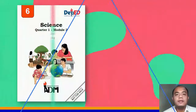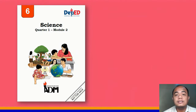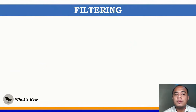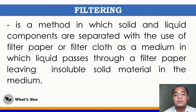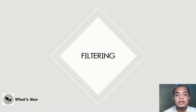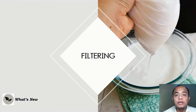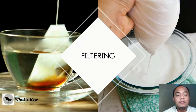Let's review module 2. This is all about the techniques in separating mixtures. Number 1 is filtering. Filtering is a method in which solid and liquid components are separated with the use of filter paper or filter cloth as a medium, through which liquid passes, leaving insoluble solid materials behind. Filtering is used for separating liquid and solid mixtures, such as getting juice from grated coconut and separating tea powder from hot water.